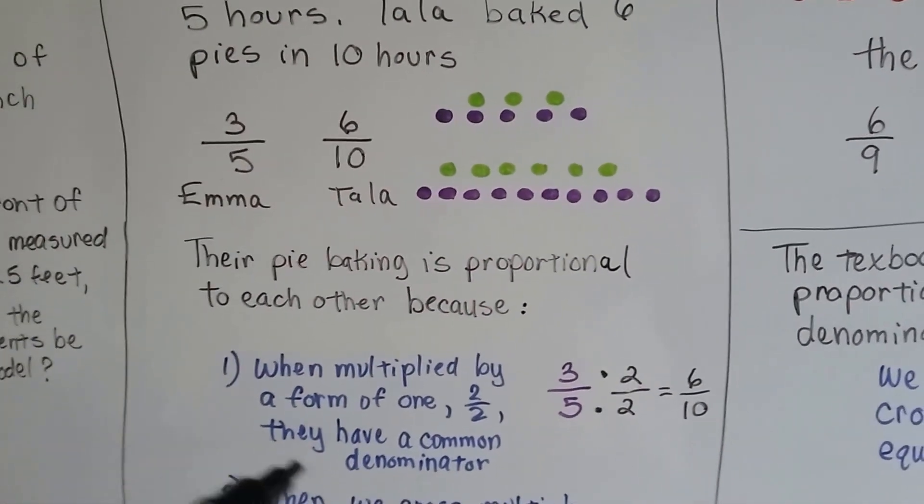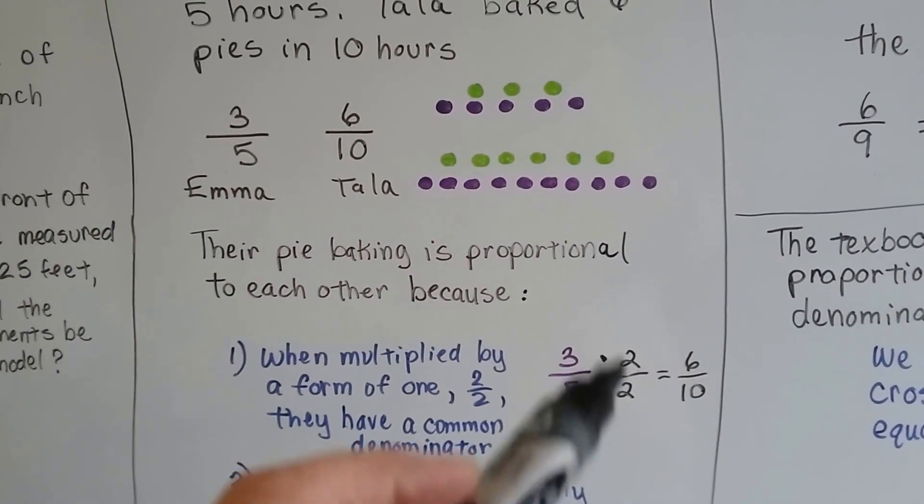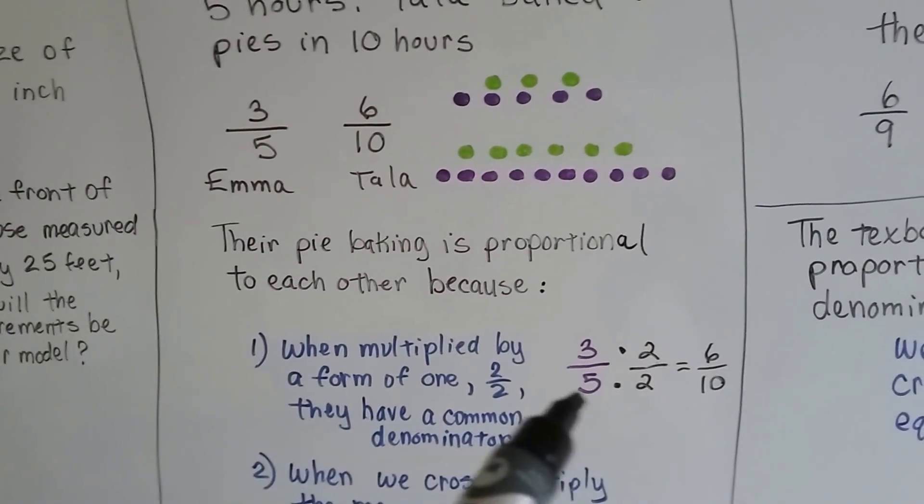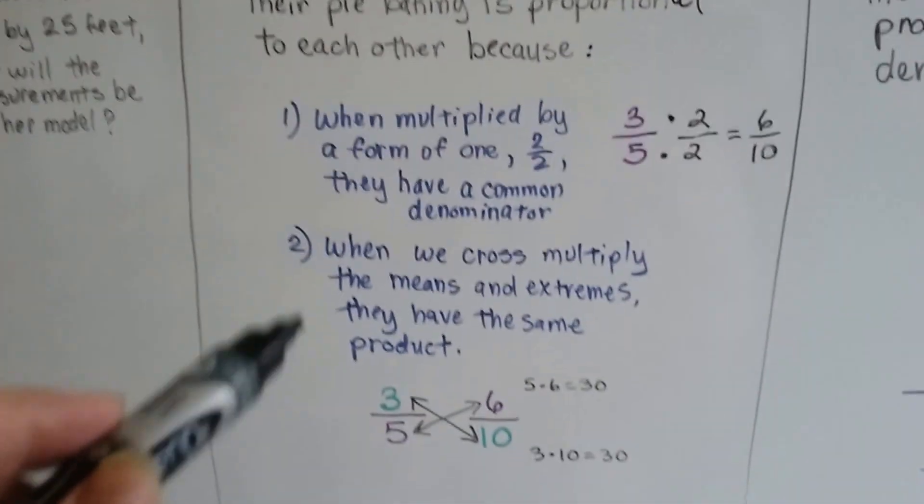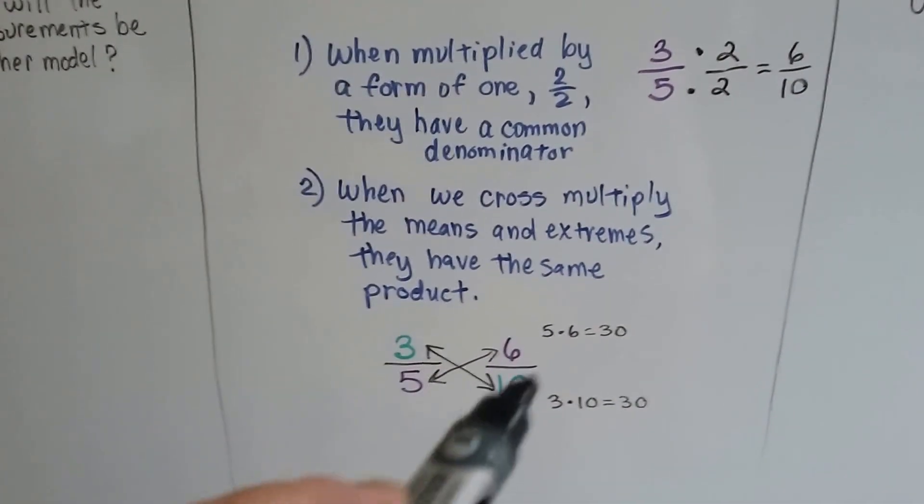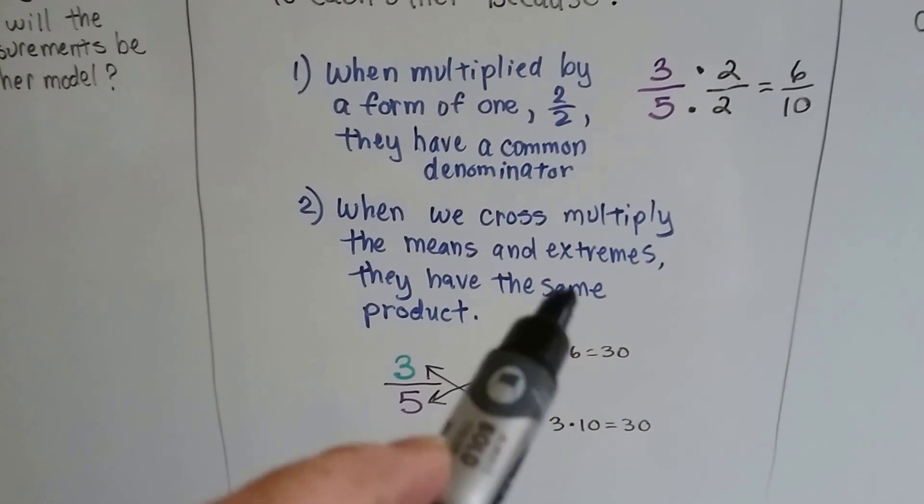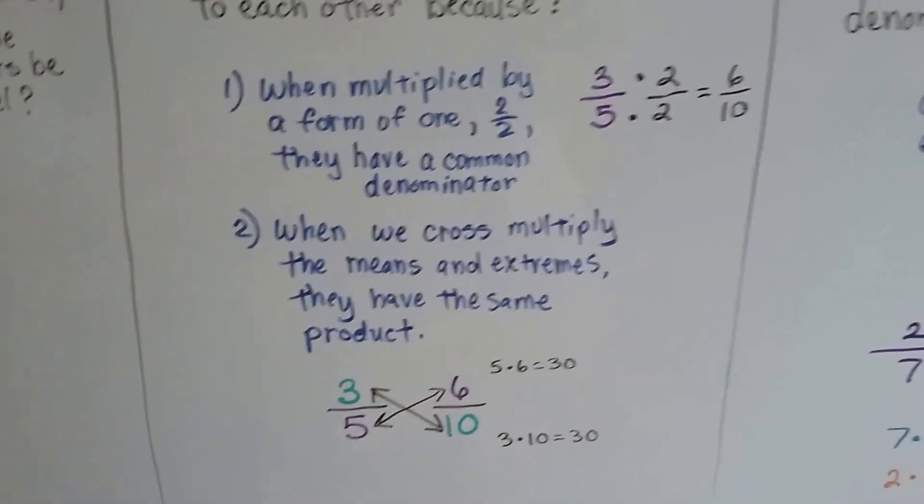the first reason is when multiplied by a form of one, two over two. See? Numerator denominator is the same, so it makes one, so it's a form of one. Three times two is six, and five times two is ten, and it's the same as Tala's. The other reason we know it's in proportion is when we cross-multiply the extremes and the means, their products are the same. Three times ten is thirty, and five times six is thirty. We learned that in the last video.